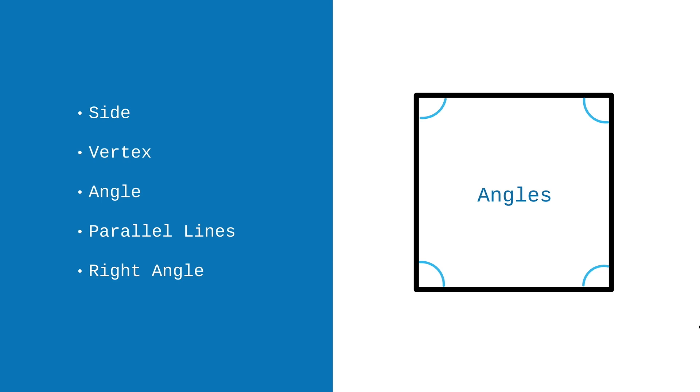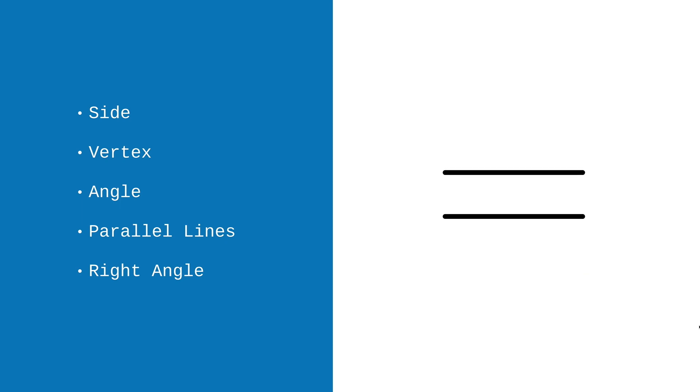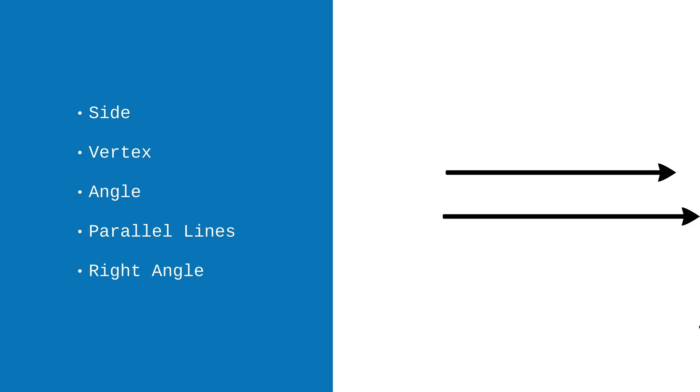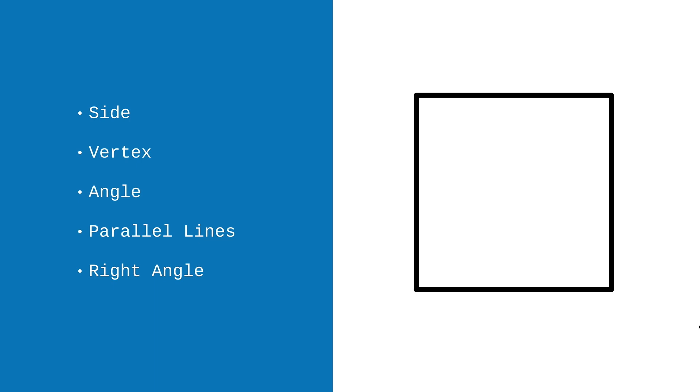Now there are two new ideas that we'll be thinking about today as well. One is parallel lines. Parallel lines are lines that are always the same distance apart. If we imagine that the lines travel forever in either direction, they will never, ever cross, because they will always stay the same distance apart. In this shape, there are two sets of parallel lines — the lines on the left and on the right are parallel, and the top and bottom lines are parallel to each other. A special kind of angle is called a right angle, sometimes called a square angle. A right angle is when two sides meet and they create an L or square-shaped angle. We'll talk more about those as we investigate a few different shapes.